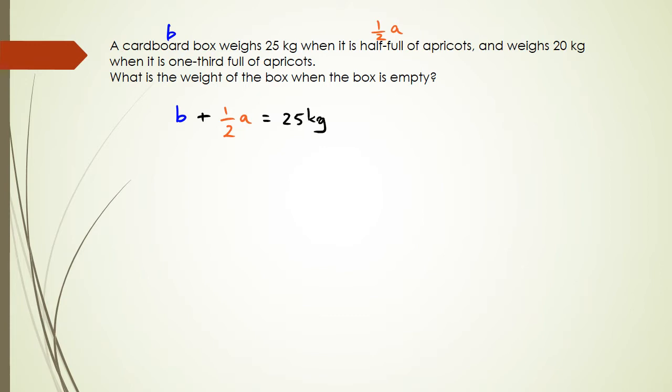Our second statement is that a cardboard box weighs 20 kg when it's one third filled with apricots. So that means we've got the box plus one third of the apricots, and that's equal to 20 kgs. Okay, so we've got to try and figure out what's the weight of the box when the box is empty.